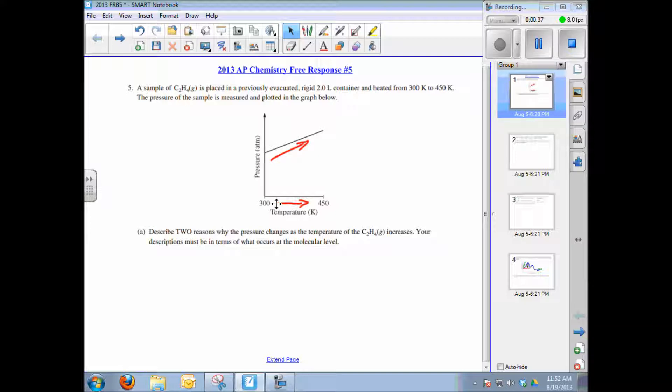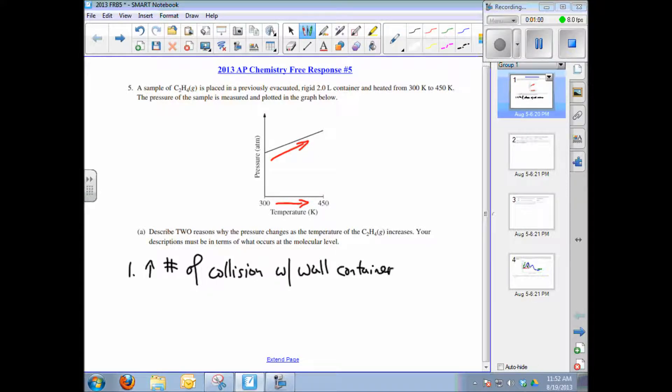This means they want a particle-based explanation of what is occurring. First, increased temperature means that particles are moving with more velocity, so you have an increase in the number of collisions of the gas particles with the wall of the container. That's one answer. The second is that not only do you have more collisions, but you have higher kinetic energy of each collision.